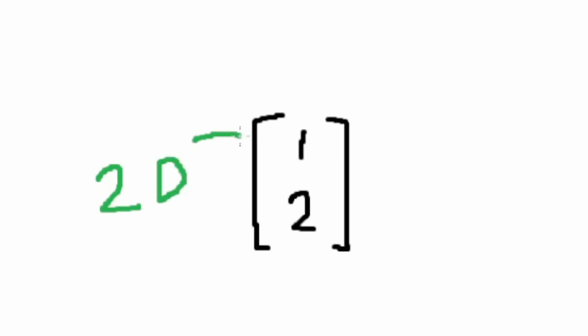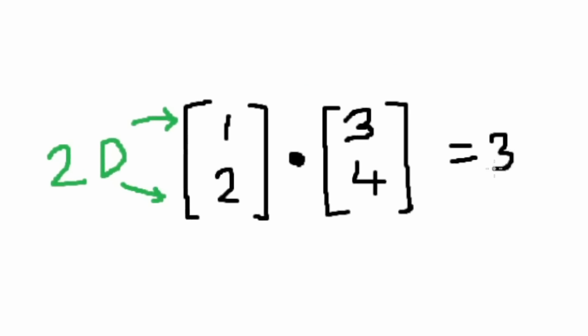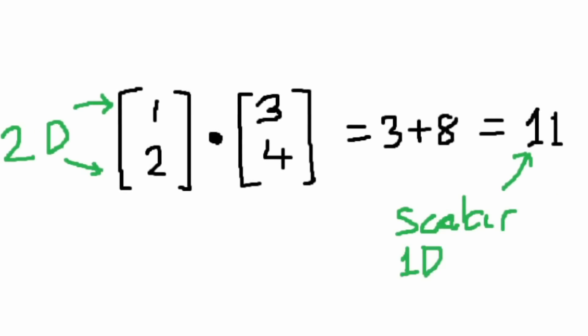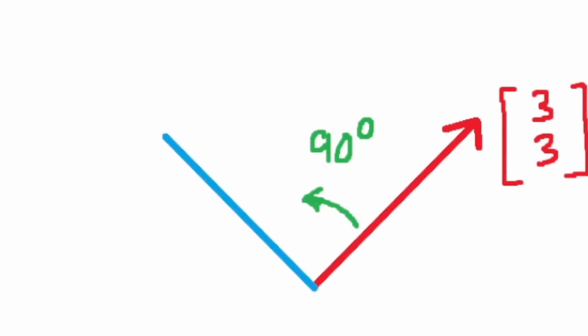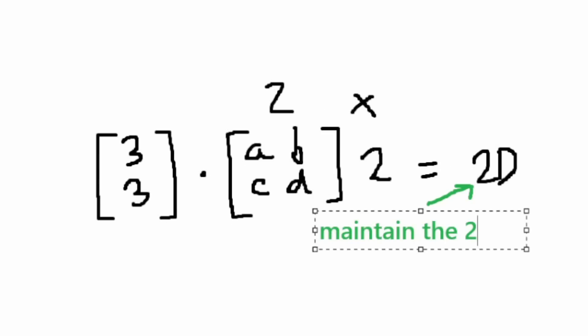When we multiply a 2-row or 2D vector by another one, you'll always get a scalar that is 1D. Now because we want another vector that is 2D after the transformation, we must be multiplying it by a matrix that is 2 by 2 to maintain the 2.